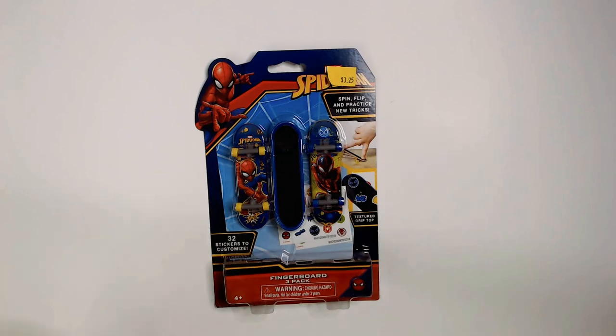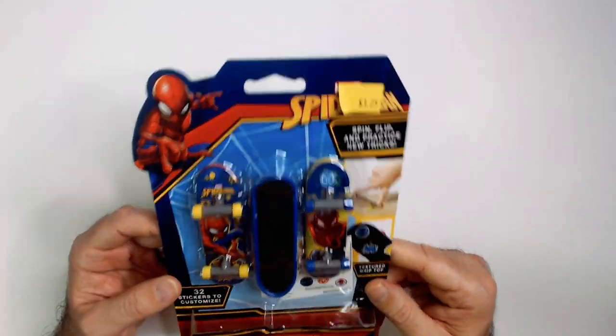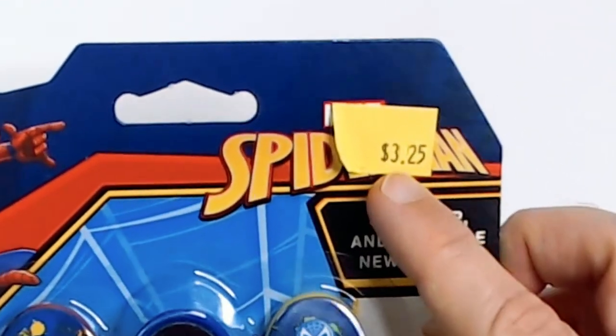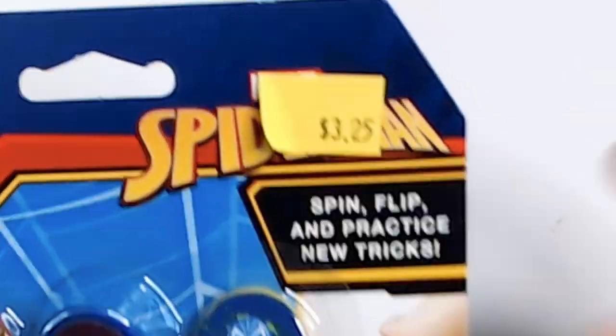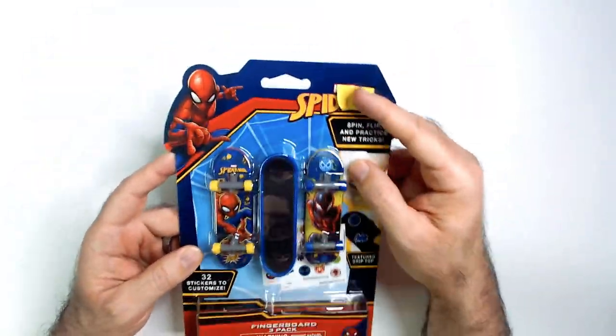Hey, welcome to Triple R Random Work Reviews. We're going to check out the Spider-Man fingerboard three-pack. Got this from Five Below. If you want to get these, make sure you check the prices because some will say five bucks, some will say $3.25. I've even seen them in the dollar bin or three for a dollar, so they're all over the place. Make sure you get the cheapest one you can find.